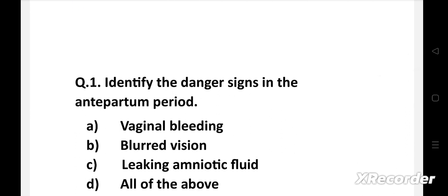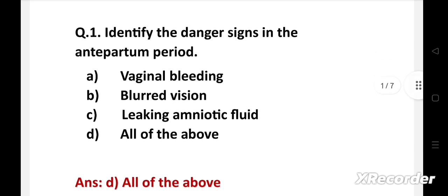Identify the danger signs in the antepartum period. Option a: vaginal bleeding, b: blurred vision, c: leaking amniotic fluid, d: all of the above. The right answer is option d, all of the above. All of the above mentioned are the danger signs in the antepartum period. Other than this, rapid increase in weight and high BP are also danger signs of antepartum period.